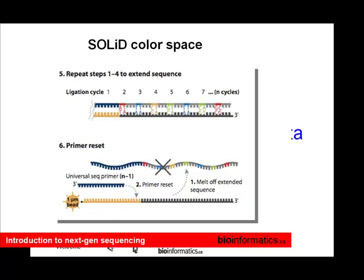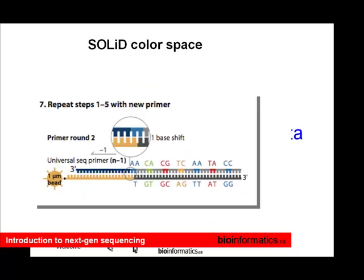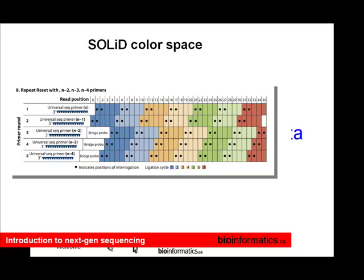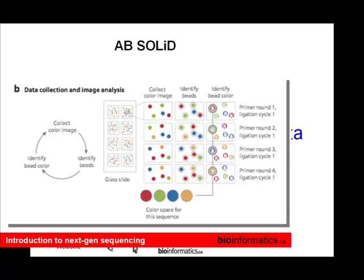You repeat all those steps — taking pictures at every step — but now you're interrogating two different nucleotides every seven or eight positions. You end up doing this five times, so for a 35-mer — or 50-mer now — every position has been interrogated twice, giving you two informative positions that tell you what's at that position. You end up with a 35-nucleotide read length that has informed you what was at each position across the molecule.